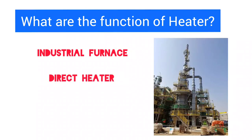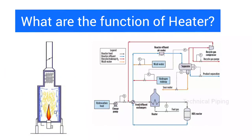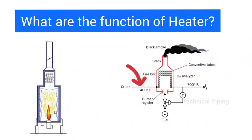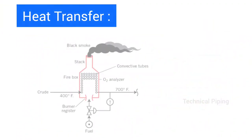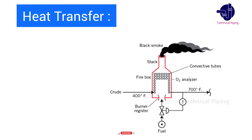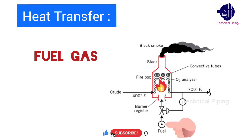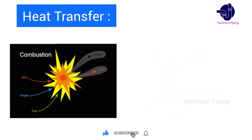What are the functions of heaters in a refinery? An industrial furnace, also called a direct heater or direct fired heater, is a device used to raise the temperature of process fluid from low temperature to high temperatures with control measures. To raise the process fluid temperature, we need heat energy in the heater.